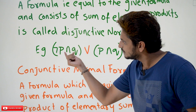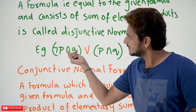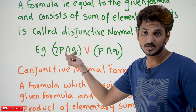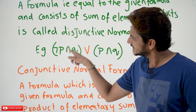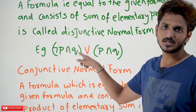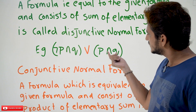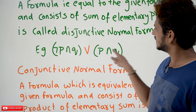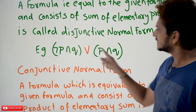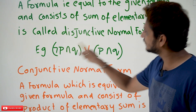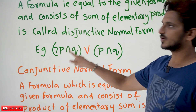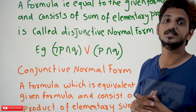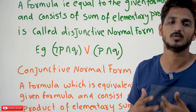For example, the proposition negation P conjunction Q — we call it an elementary product. And P conjunction Q is also an elementary product. If you have a sum of elementary products such as (negation P conjunction Q) disjunction (P conjunction Q), then we call it disjunctive normal form.